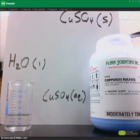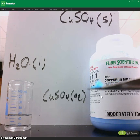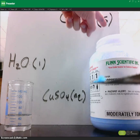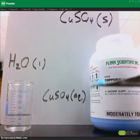Now let's take a look at copper(II) sulfate. You can see that copper(II) sulfate is a solid, which is why we've written S as the phase notation.